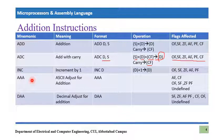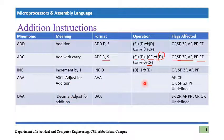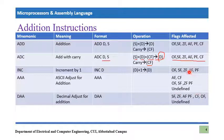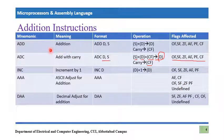Two other instructions are AAA (ASCII Adjust for Addition) and DAA (Decimal Adjust for Addition). These are important when dealing with ASCII or BCD data formats. Some flags are defined and some are undefined for these instructions — we will observe their operation by practicing on the emulator.